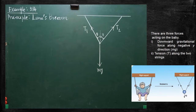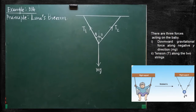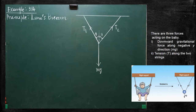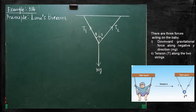Now, we are going to solve a problem that is based on Lamy's theorem. A baby is playing in a swing which is hanging with the help of two identical chains, and it's at rest. Identify the forces acting on the baby, apply Lamy's theorem, and find out the tension acting on the chain. That is the question asked.